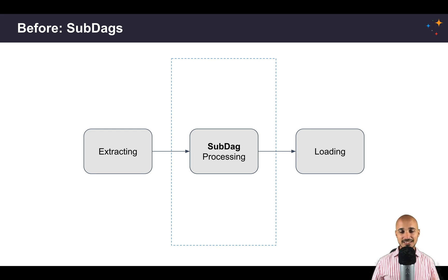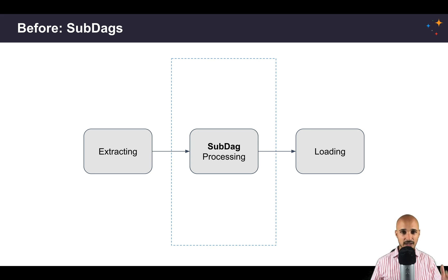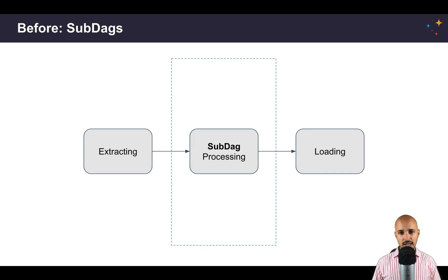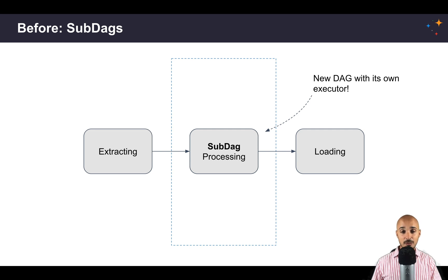Now what are the problems with sub DAGs? The first one is that the sub DAG operator is seen as a task, so if you have a limited number of tasks that you can execute in your Airflow instance — for example four — and you have four different sub DAG operators, you will end up with a deadlock, meaning you won't be able to schedule any new DAGs. Also, a sub DAG is really a new DAG inside your DAG, meaning it has its own executor and its own schedule interval, which can become a real issue if you don't share the same parameters between the parent DAG and the sub DAG.